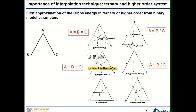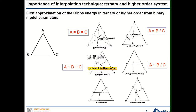There is another type called the Toop interpolation technique. The Toop type assumes that one component — say component 1 — is asymmetric from components 2 and 3. Components 2 and 3 have similar behavior, but component 1 is different. Under Toop interpolation, the Gibbs energy of point P is estimated from the iso-composition points of component A in the binary systems. This is an asymmetric type of interpolation technique, generally called the Toop interpolation technique.